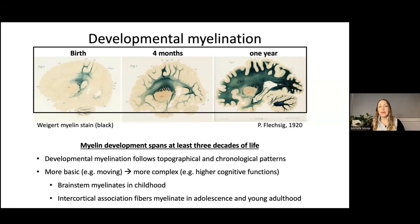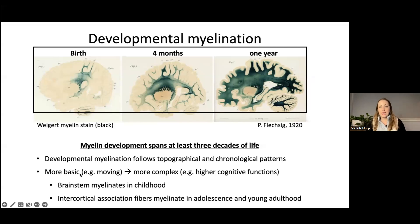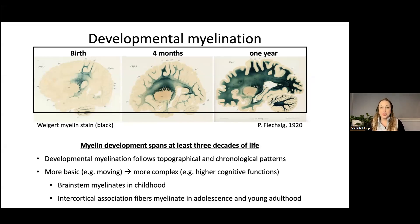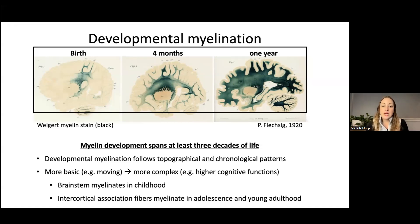In general, this developmental myelination process spanning about three decades follows the rule that more basic neural circuitry — such as that underlying sensation and movement — myelinates prior to more complex neural circuitry underlying higher cognition. For example, there's a discrete wave of developmental myelination in the brainstem in mid-childhood around the time that kids gain the ability to ride a bike without training wheels and attain multiple higher-level motor milestones. Then neocortex and intercortical association fibers see a discrete wave of myelination in adolescence and young adulthood.